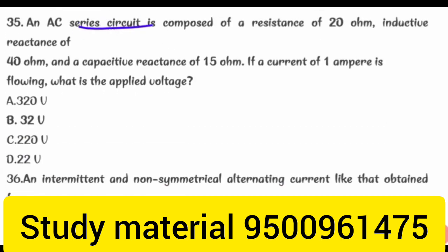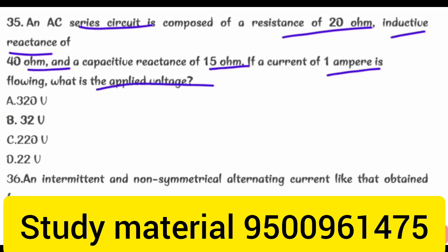An AC series circuit is composed of a resistance of 20 Ohm, inductive reactance of 40 Ohm, and a capacitive reactance of 15 Ohm. If a current of 1 Ampere is flowing, what is the applied voltage?